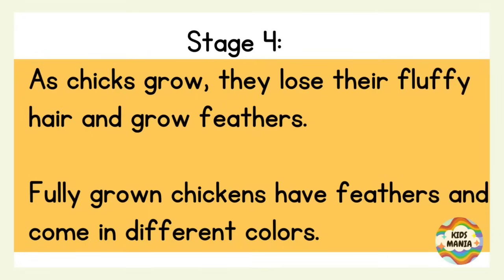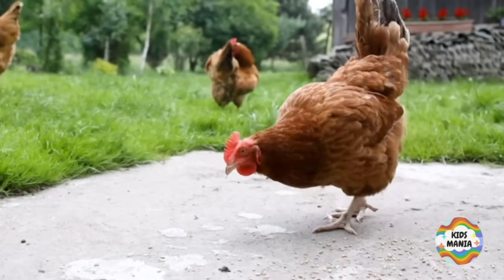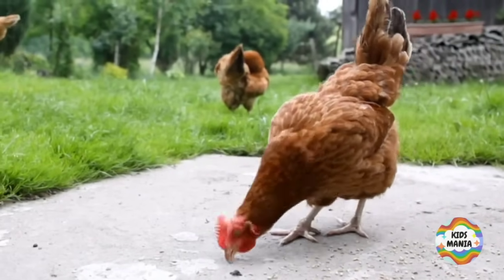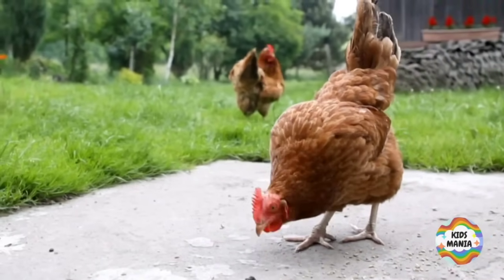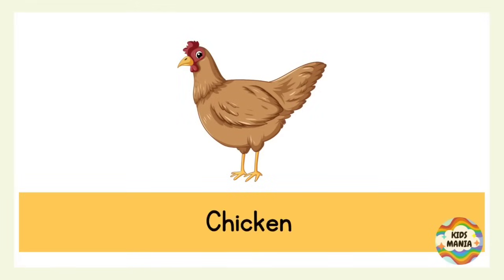Stage four: as chicks grow, they lose their fluffy cute hair and grow feathers. Fully grown chicks now have feathers and they come in different colors. Here is the fully grown chick — it's called a chicken. This is a chicken.